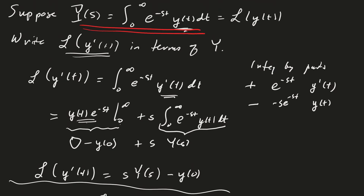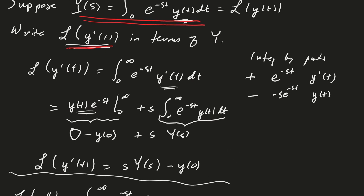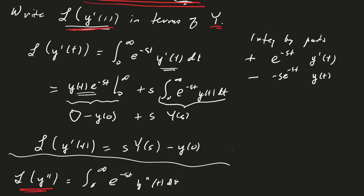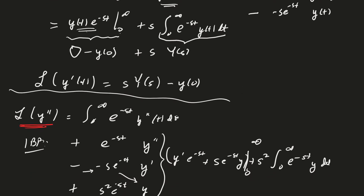This is our original Laplace transform. Previously we talked about computing the Laplace transform of y prime in terms of the Laplace transform of y, and we found that the Laplace transform of y prime equals s times the Laplace transform of y itself minus y of 0. Remember, y of 0 is a constant.